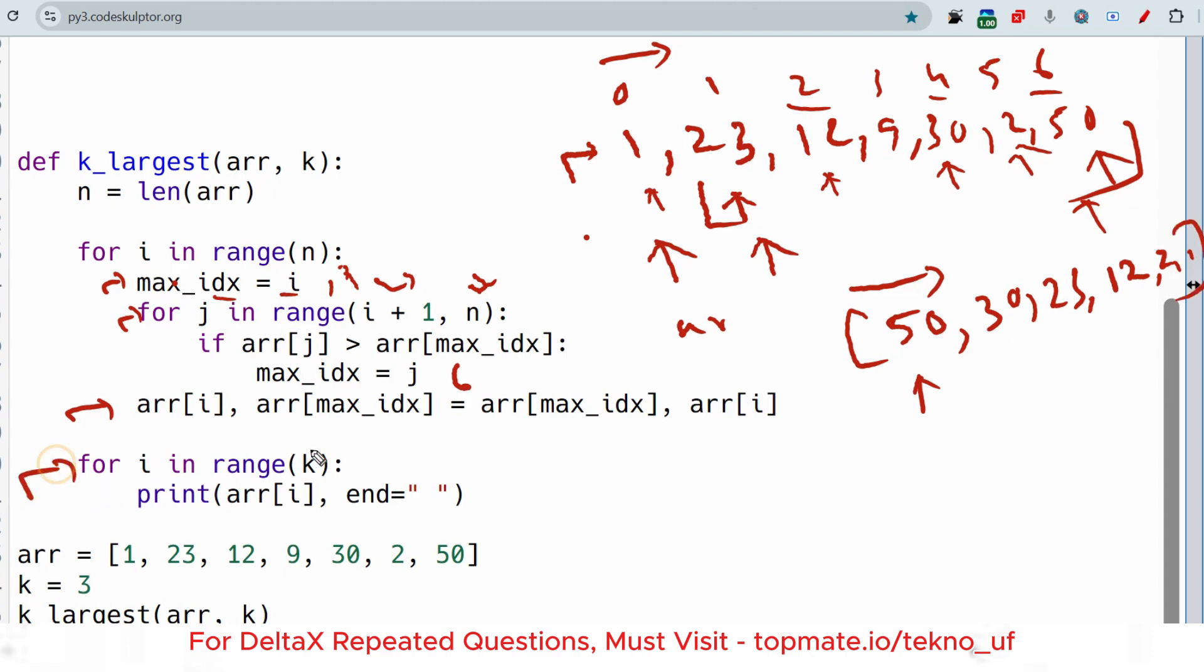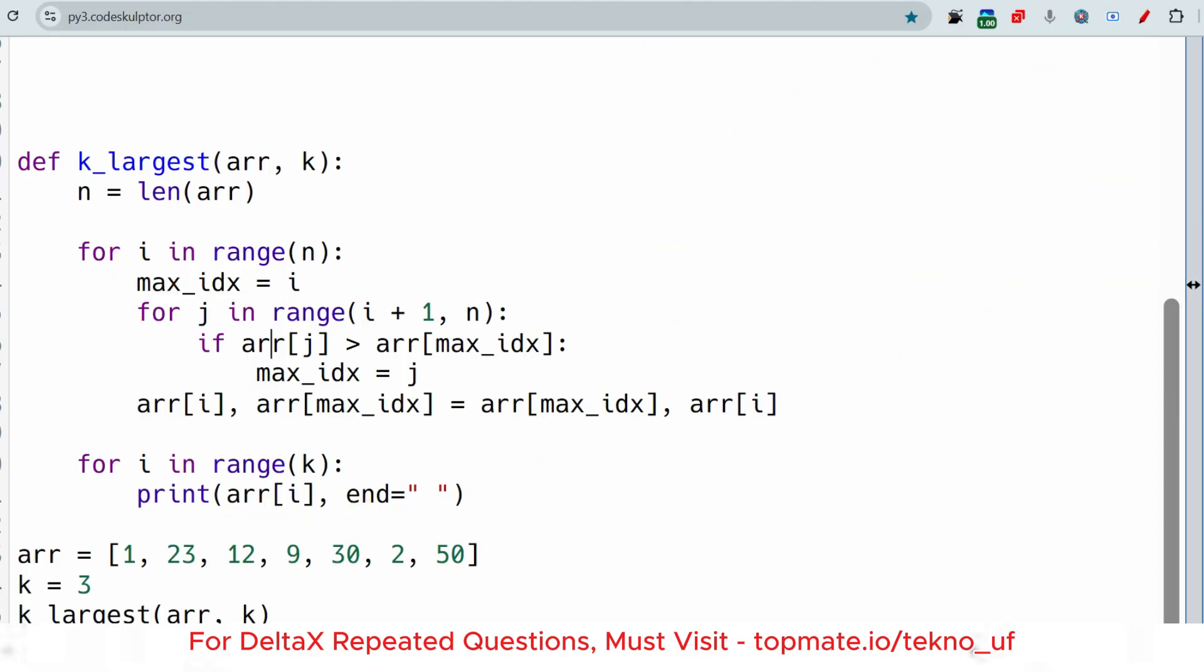Here we are doing the print operations - we are just printing K-th largest values. Three is the K value, so we're printing three largest values.